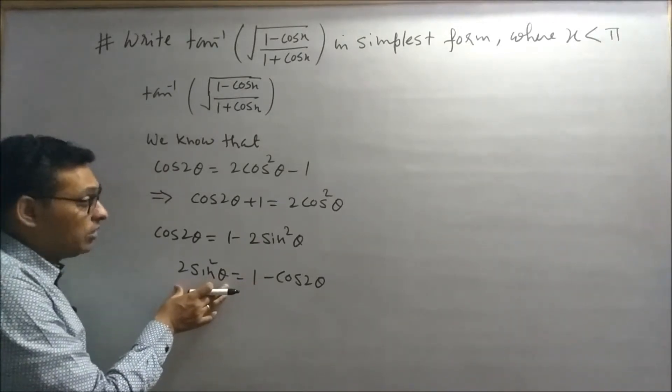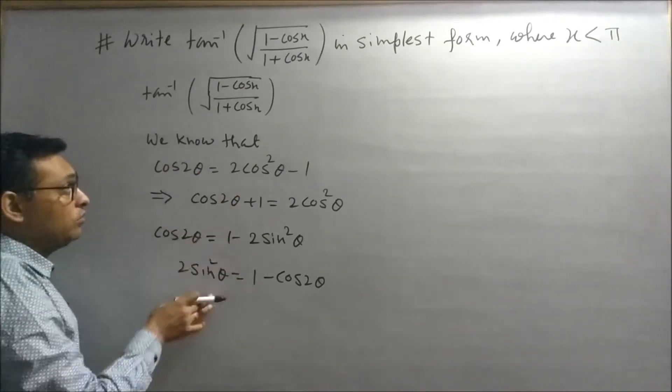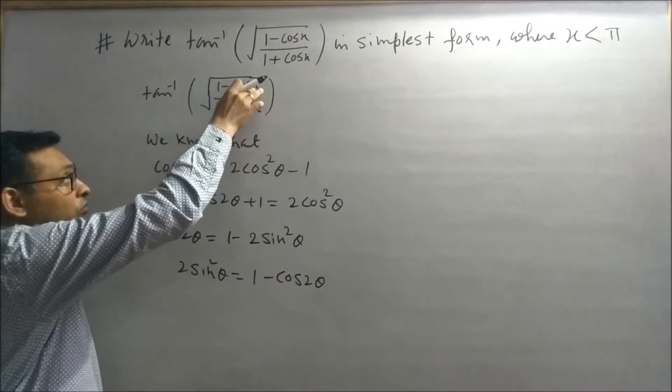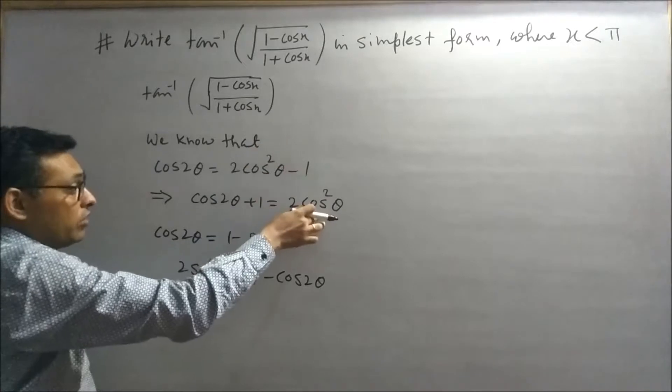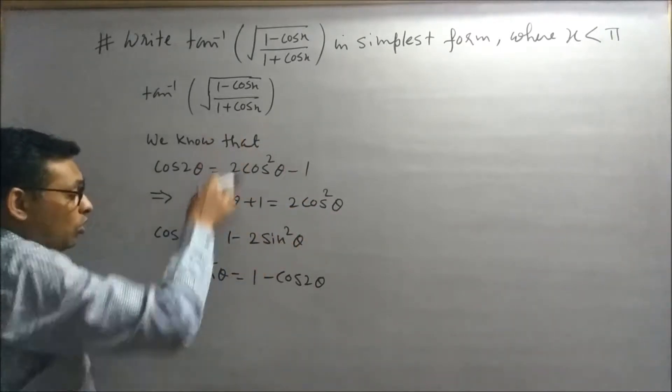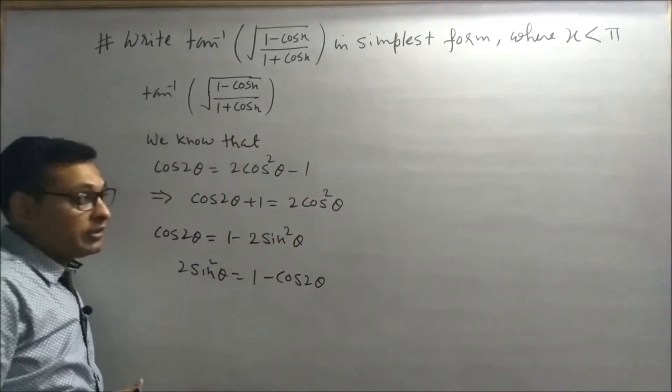Using this identity, we will change 1 minus cos x and 1 plus cos x to 2 cos² (x/2) and 2 sin² (x/2).